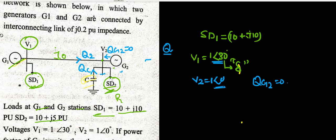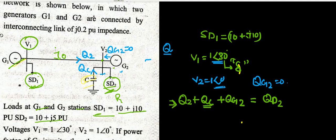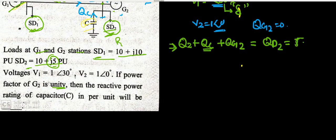Applying reactive power compensation at bus V2, the balance equation is: Q2 + QC + QG2 = QD2, where QD2 is the reactive power requirement of the load at bus 2. From SD2 = 10 + j5, QD2 = 5 per unit. Since QG2 = 0 as the generator is operating at unity power factor, this simplifies the equation.